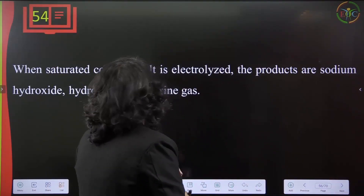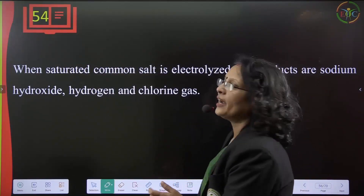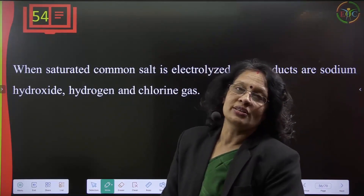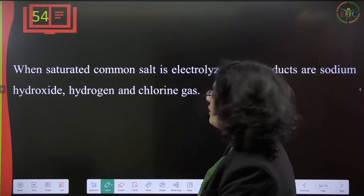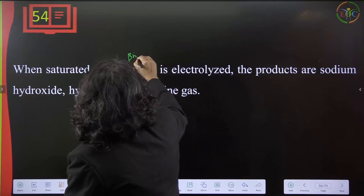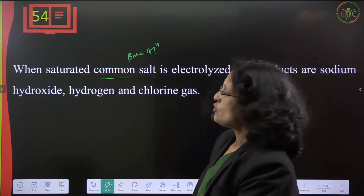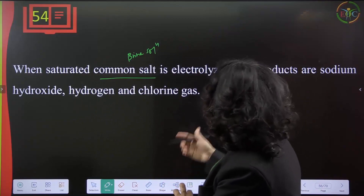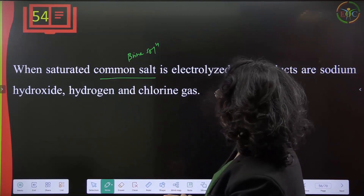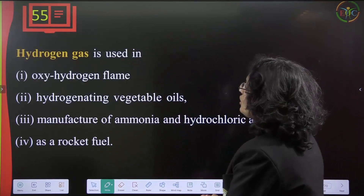When saturated common salt (brine solution) is electrolyzed, the products are sodium hydroxide, hydrogen gas, and chlorine gas. This is a very popular manufacturing method for sodium hydroxide. Brine solution reacts with water to give sodium hydroxide, with hydrogen and chlorine as side products.